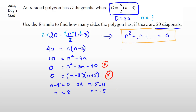Those are your two answers, but this is the part where you need to finish the question off. Can you actually have an 8-sided polygon? Yes — it's called an octagon. Can you have a negative 5-sided polygon? No. So it's really important that you state N equals 8 because N can't be negative. That means you're working with an 8-sided polygon, and saying this is what gets you an excellence — just putting N equals 8 and N equals negative 5 without that reasoning only gets you a merit.